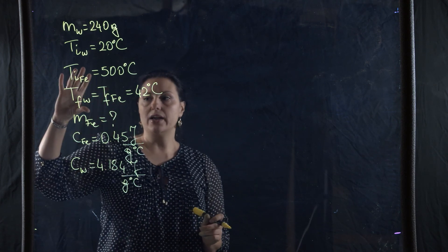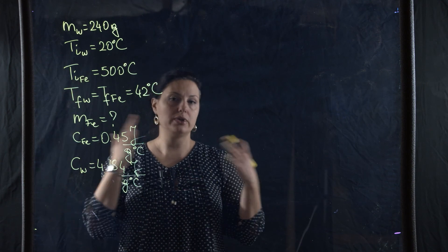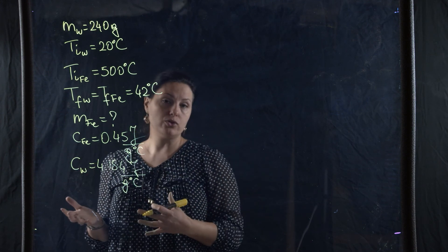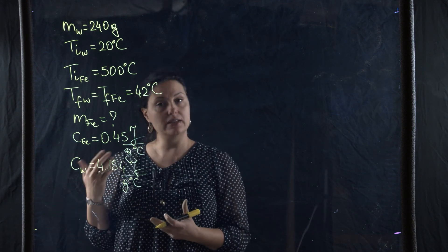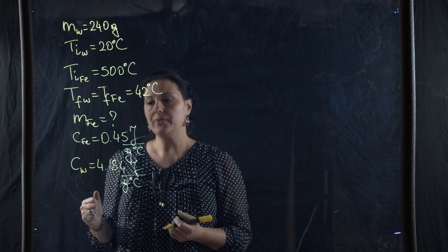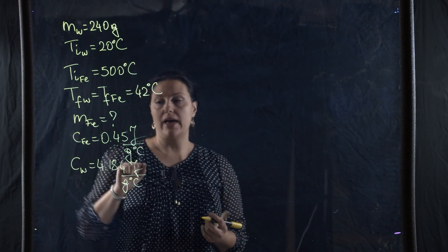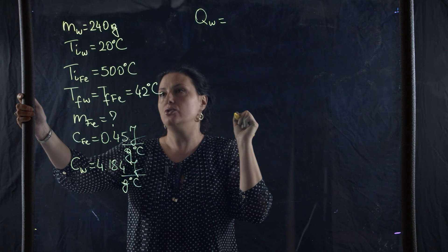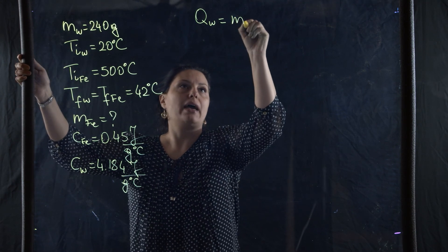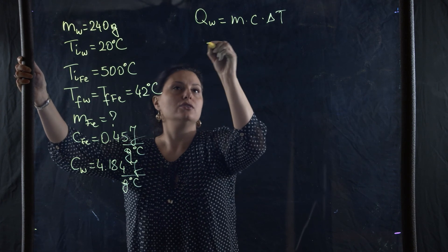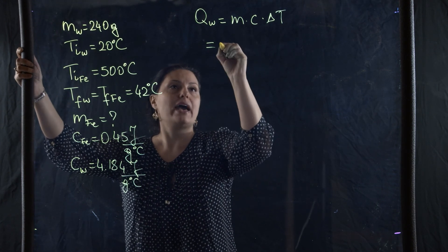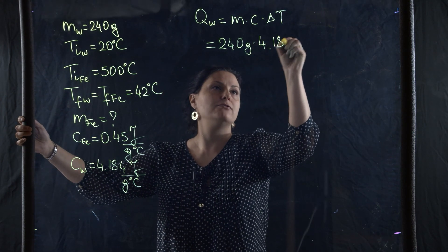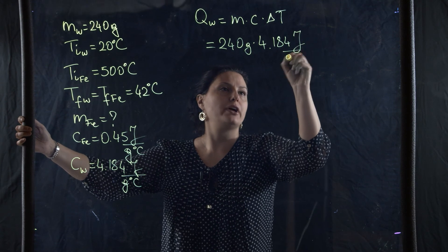All of the heat that the iron lost was gained by the water. I can first calculate that amount of heat for water, which equals the amount the iron lost but with a different sign. The heat for water is Q = mcΔT, so mass is 240 grams times C = 4.184 J/g°C.